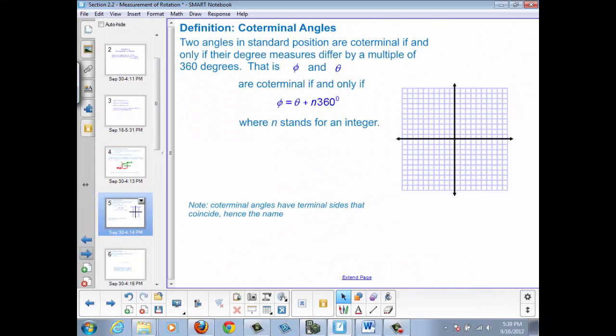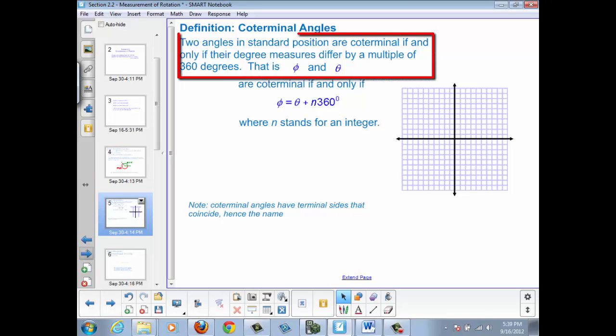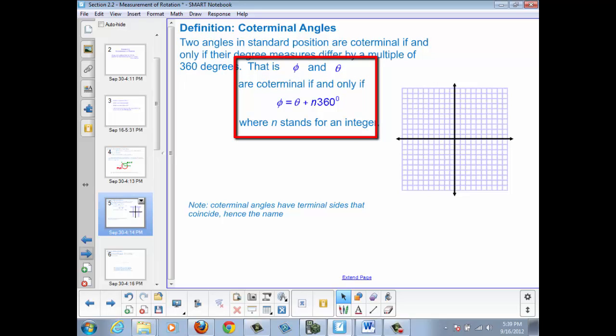Now let's talk about coterminal angles. Two angles in standard position are coterminal if and only if their degree measures differ by a multiple of 360 degrees. That is, phi and theta are coterminal if and only if phi equals theta plus n times 360 degrees, where n stands for an integer.